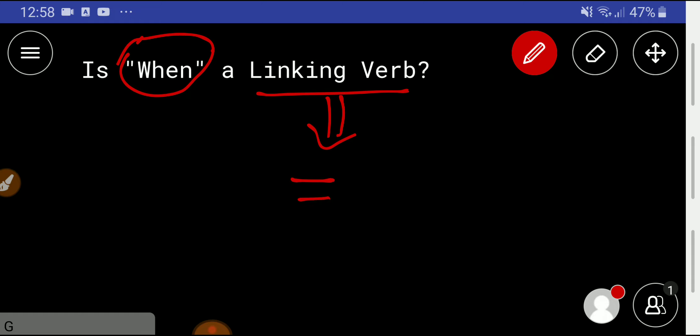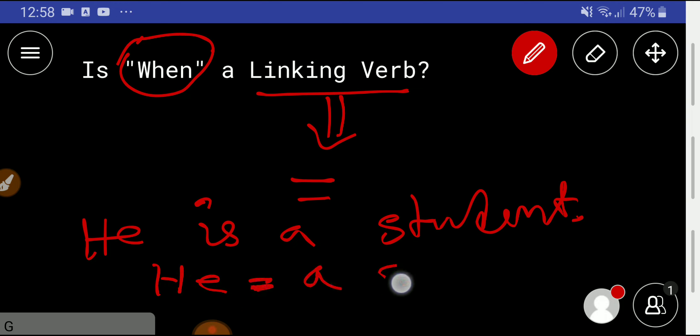Linking verbs function as equal signs. Let me give you some examples so you can understand easily. He is a student. Here, 'he' equals 'a student'.